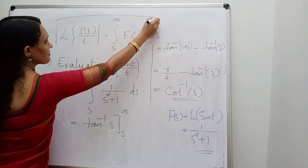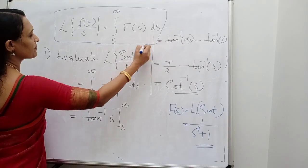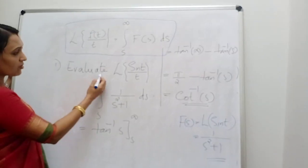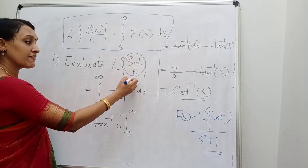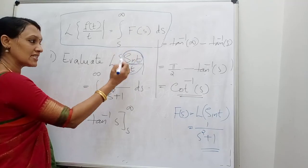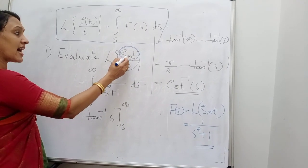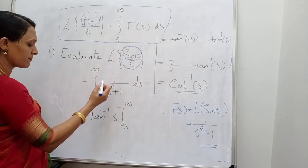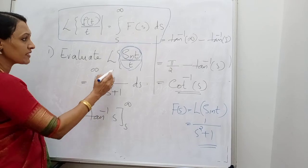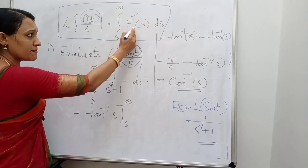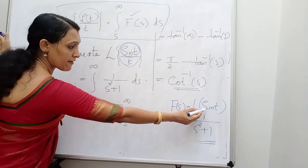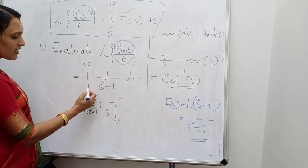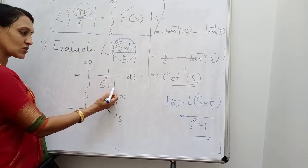We have the division formula: L{f(t)/t} = integral from s to infinity of F(s) ds. Evaluate L{sin(t)/t}. Here sin(t) is divided by t, so assume f(t) = sin(t). By the division formula it is the integral from s to infinity of F(s) ds. What is F(s)? It is L{sin(t)} = 1/(s²+1). Therefore it becomes integral from s to infinity of 1/(s²+1) ds.